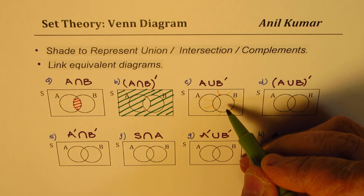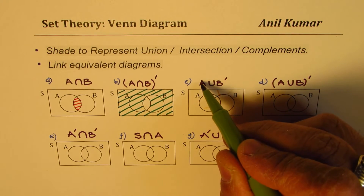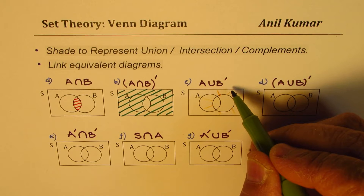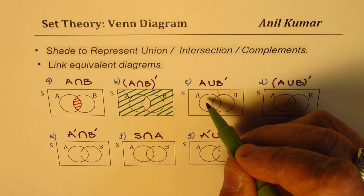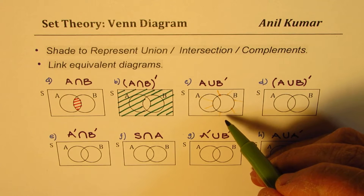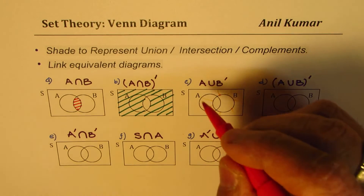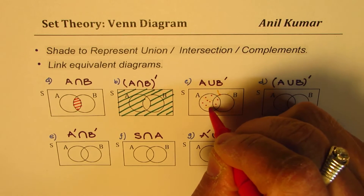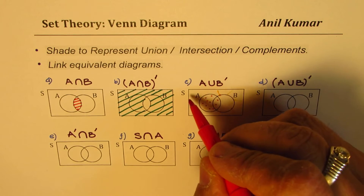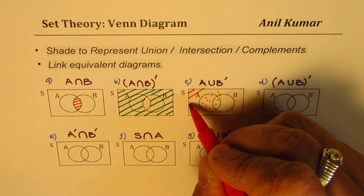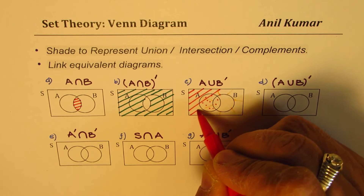So we want everything which is A union not-B. A is the entire circle A, and not-B is everything outside B. That means the only portion we do not shade is the part inside B but outside A. A covers all of circle A, and not-B covers everything outside circle B, so we shade everything that is not-B and also shade A.